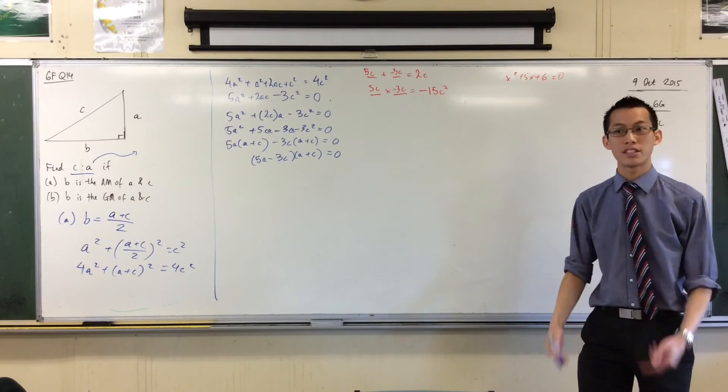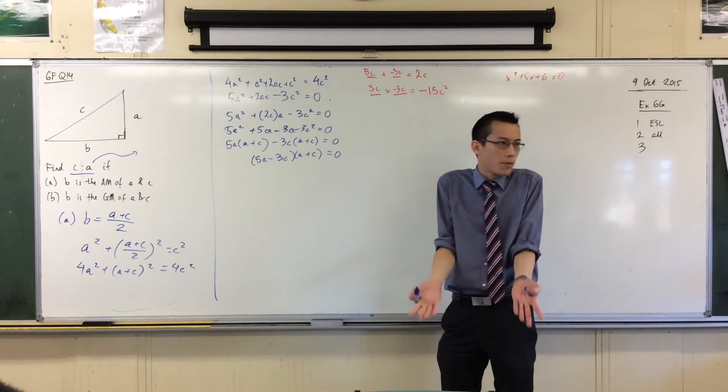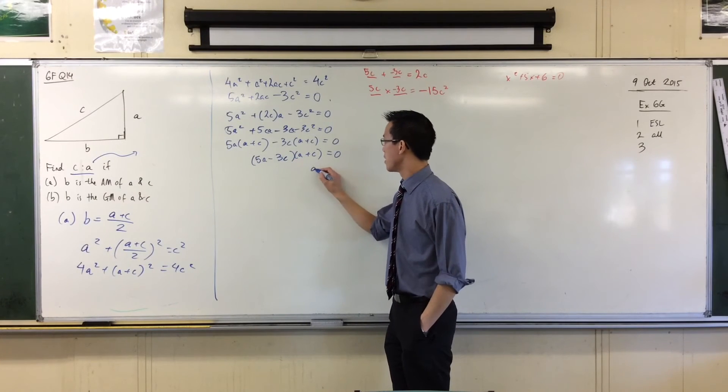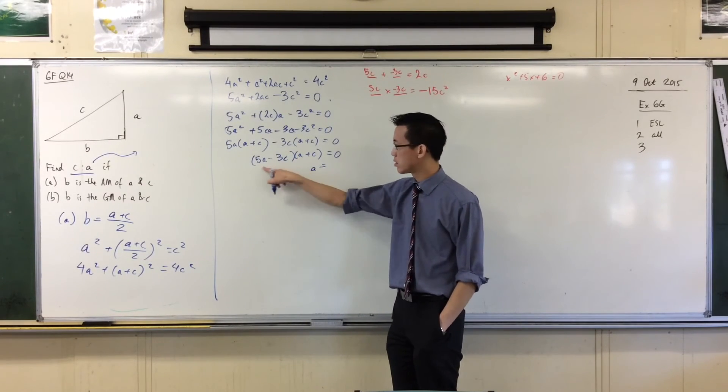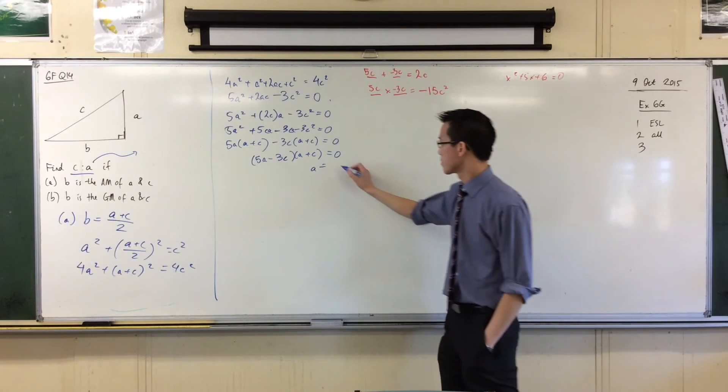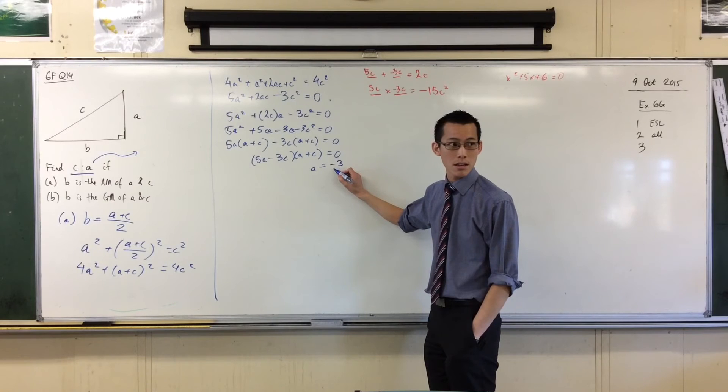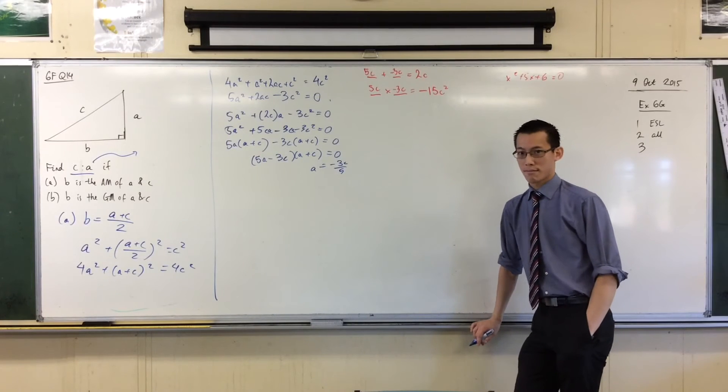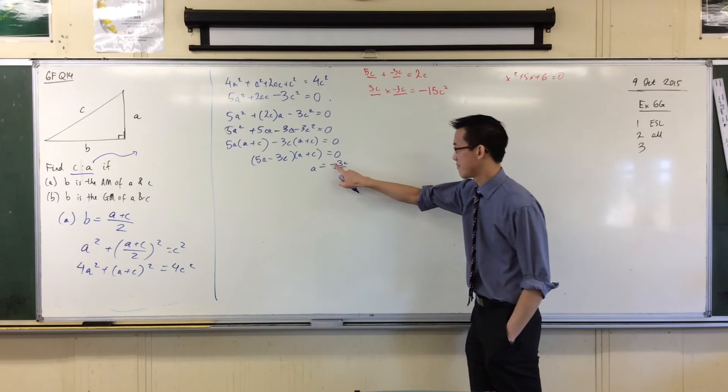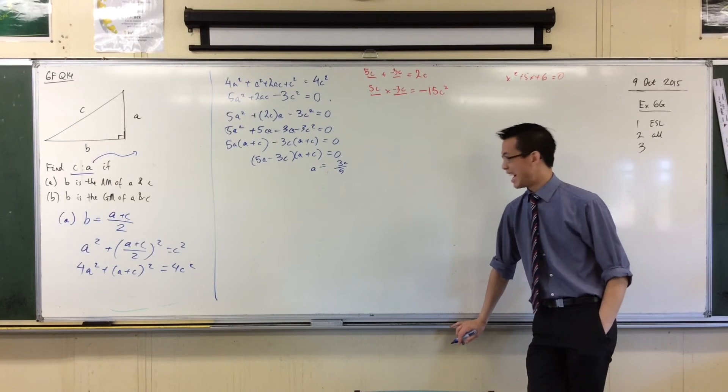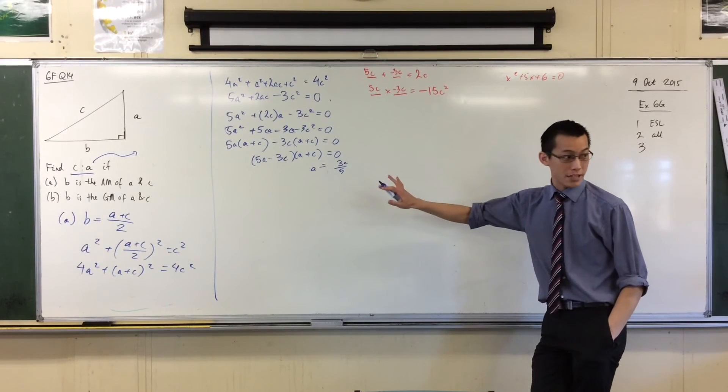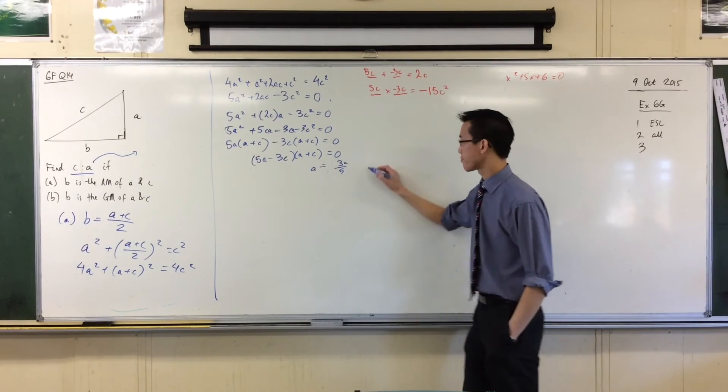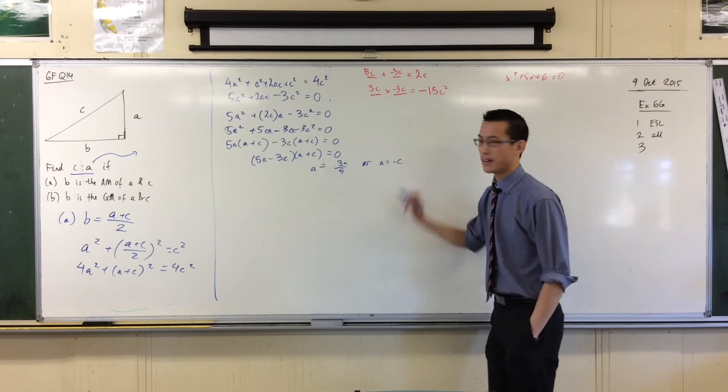Okay, so I've factorized and now I can read some solutions off this. I can solve for C or I can solve for A. It doesn't really matter. If I let this equal 0, this guy over here, what solution do I get out of that for A? Minus 3. No, 3C on 5. C on 5. Does it work? 3C. Just 3. Is that a bit better? Yes. I'll leave that for a second. I'll come back to it. I get a solution out of this, but I also get a solution out of this. What solution do I get out of this?